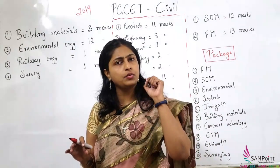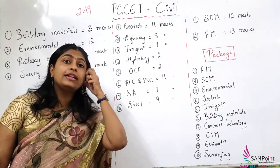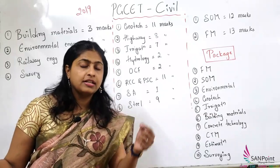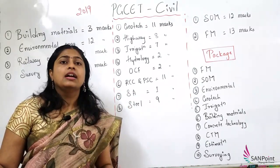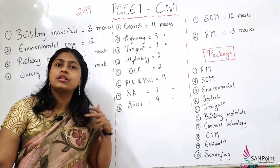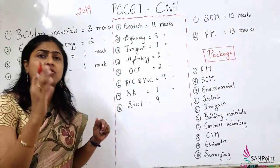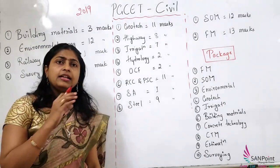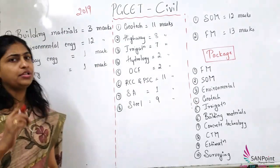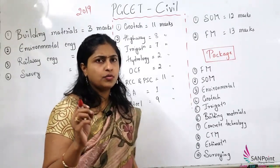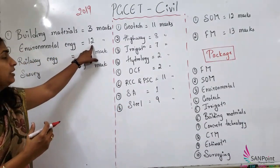In environmental engineering, you can expect questions right from the first chapter — water demand, sources of water, water quality parameters, different tests, standard units — then water treatment and distribution system. Next comes sewage collection, different tests, BOD, COD, sewage treatment, and disposal. Also included are air pollution and noise pollution. In GATE and other recent papers, questions on air pollution and noise pollution are appearing more, though you need to study very few pages — about 3-4 for air pollution and 2-3 for noise pollution — yet around 12 marks weightage.